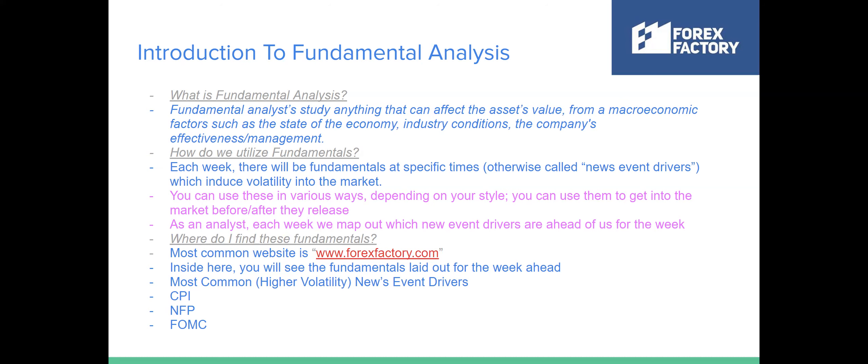The most common high-volatility news event drivers are CPI, NFP, and FOMC. Journal those down — keep them in the back of your mind. To make it very easy: it's simply a time when the market will move a lot. If there is a specific news event driver at, let's say, 7:30 a.m., you're going to see price move a lot right at that time. Whether it's good news or bad, the market will move up or lower — that's as simply as I can put fundamentals.